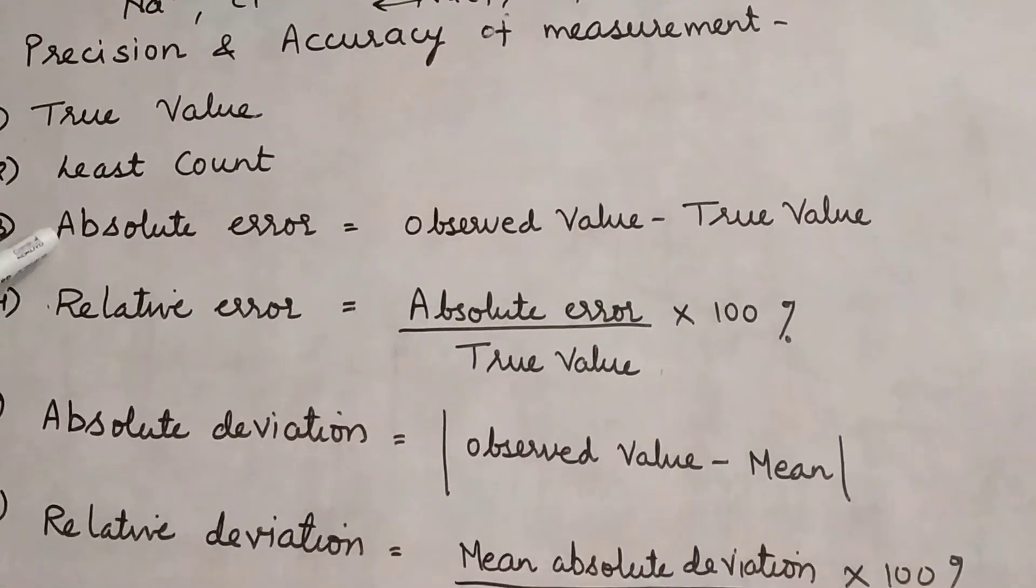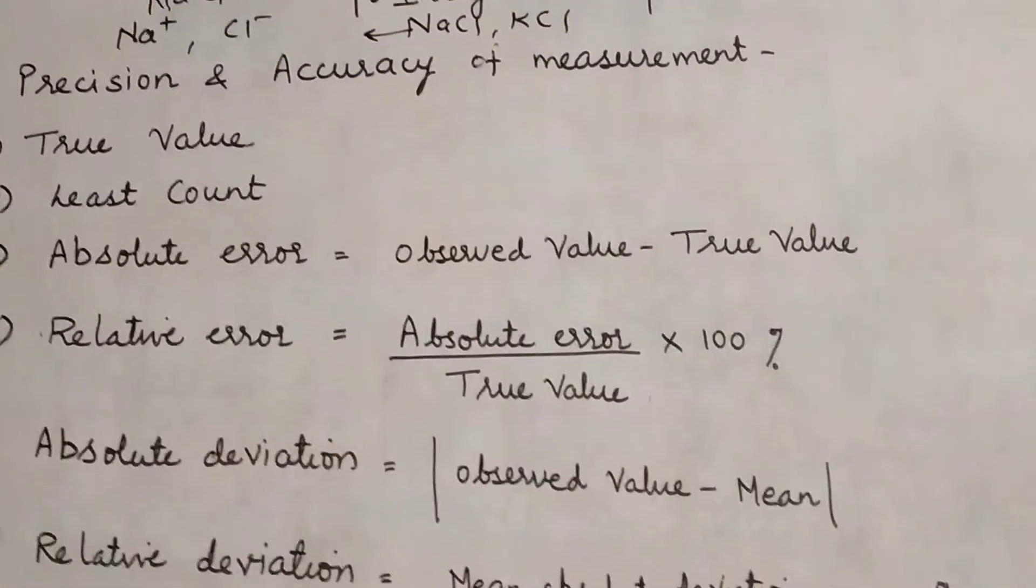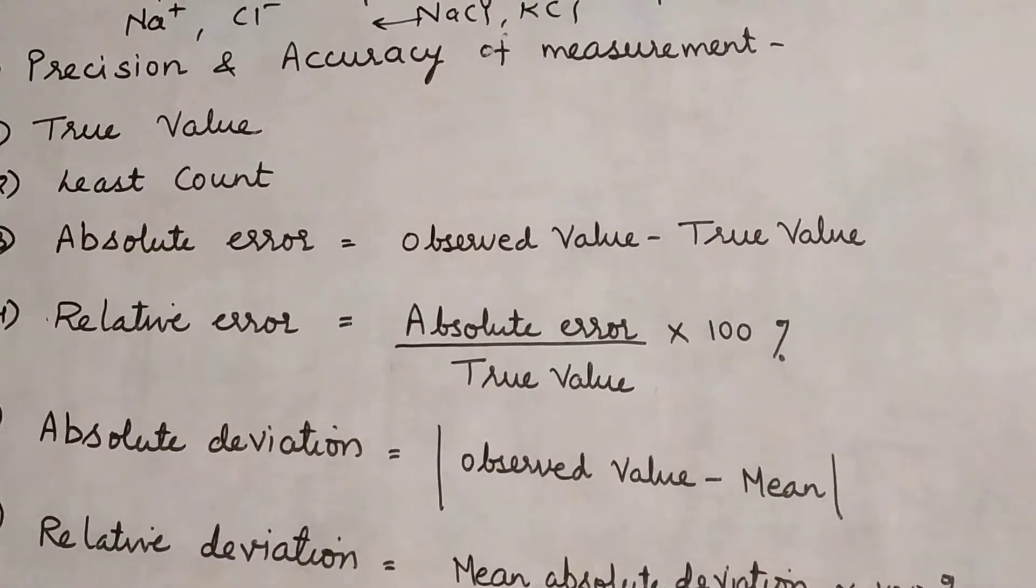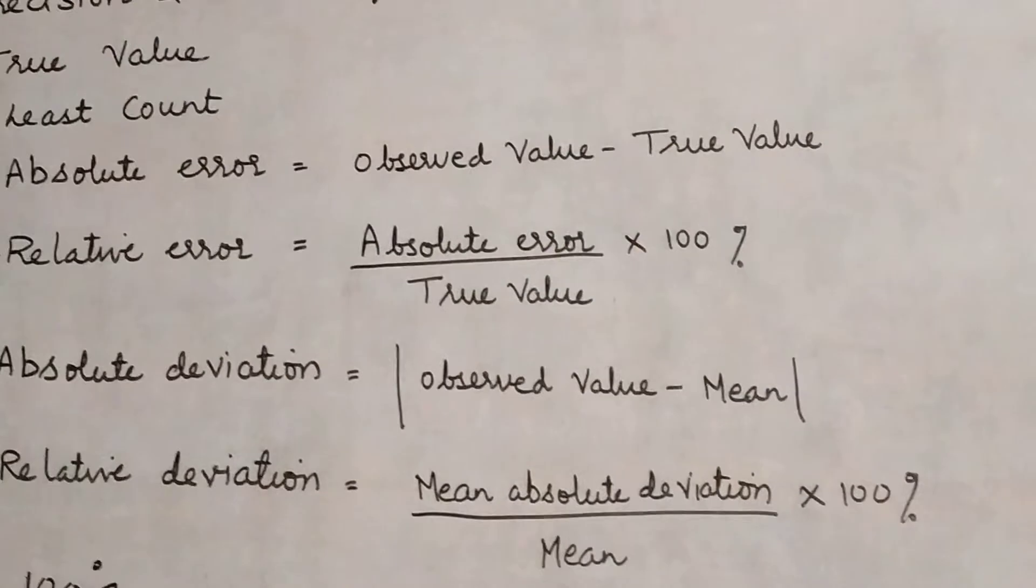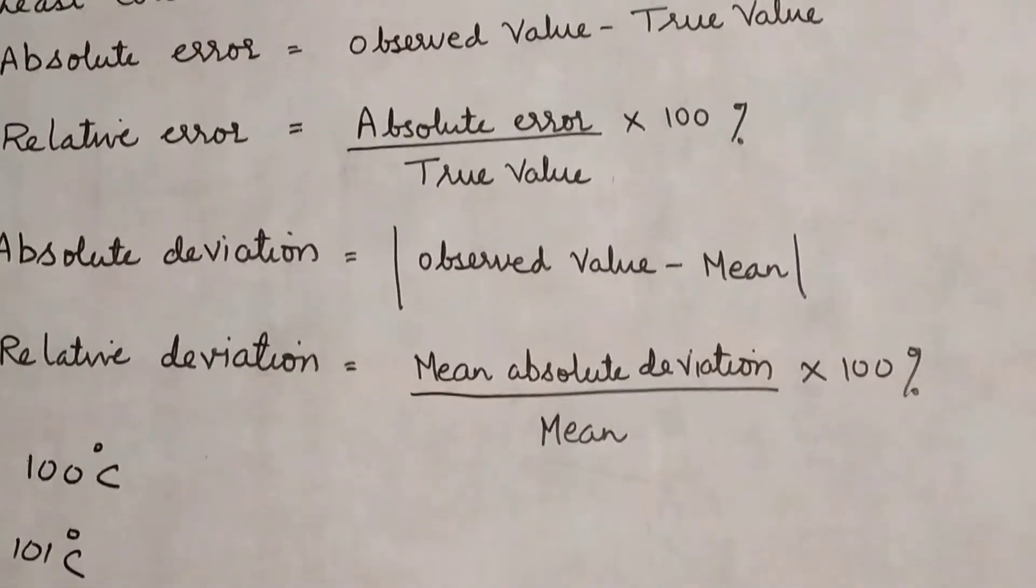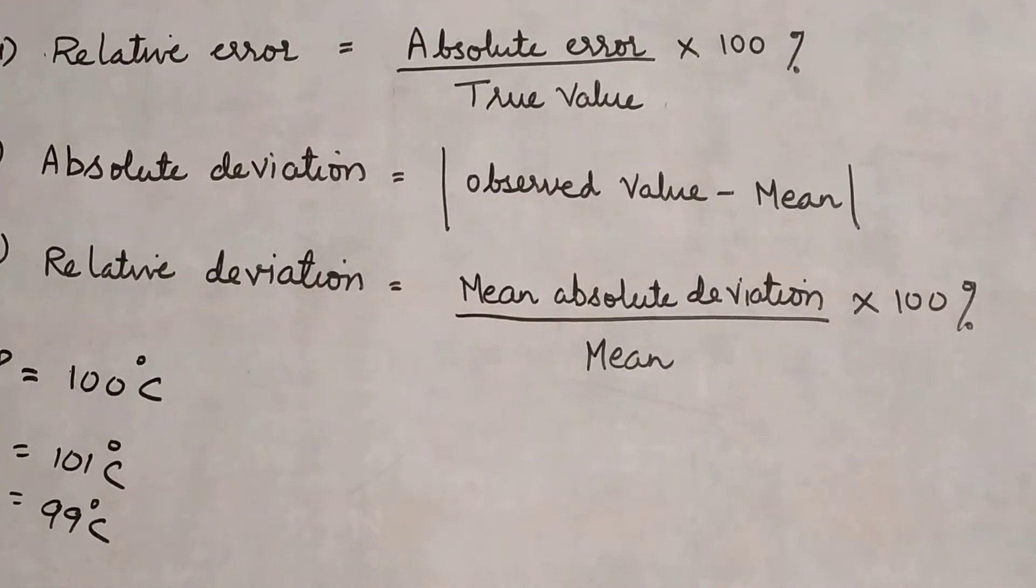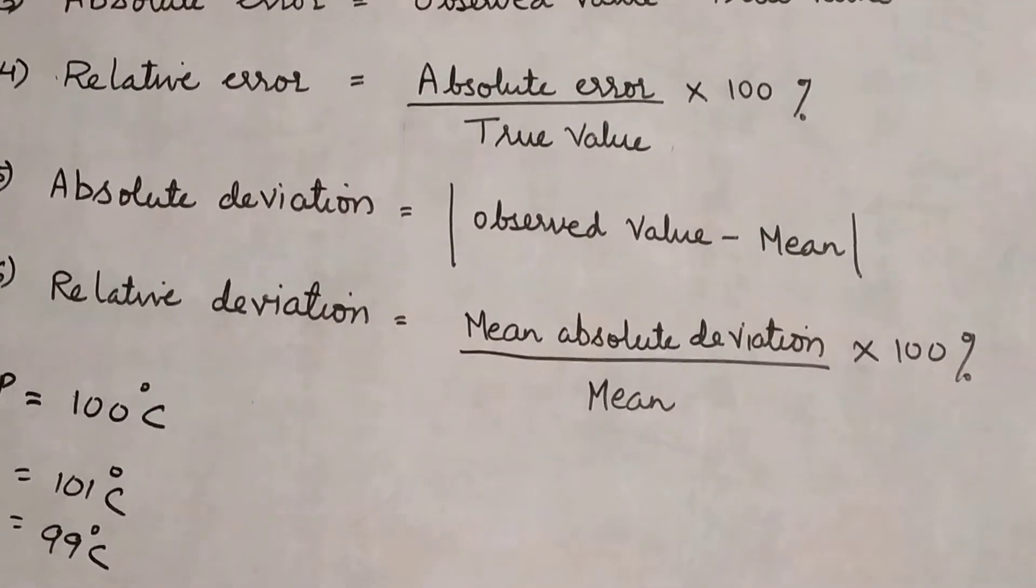Third is absolute error. To find absolute error, to know what error is there in our experimental value - that is called absolute error. It is observed value minus true value. Subtract these two and you will get absolute error. Next is relative error, which has a criterion for how to find it: absolute error upon true value into 100.